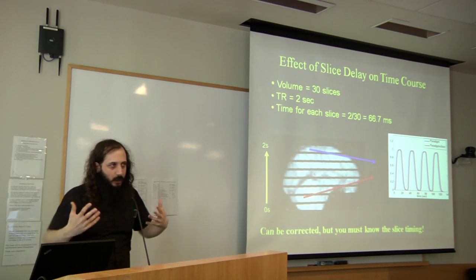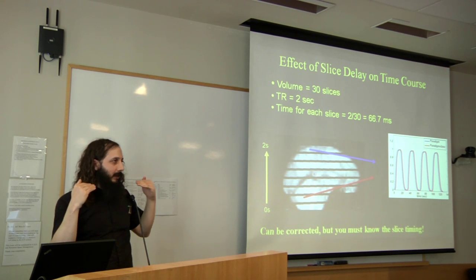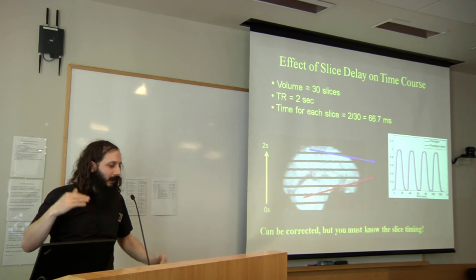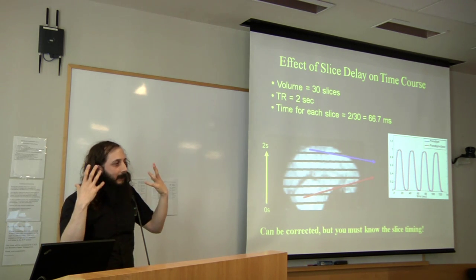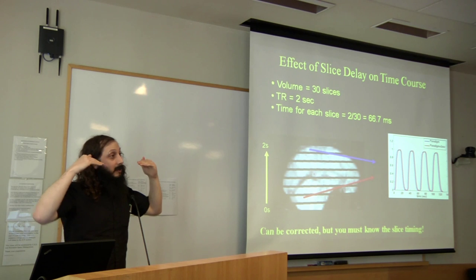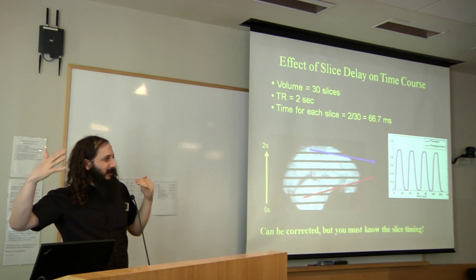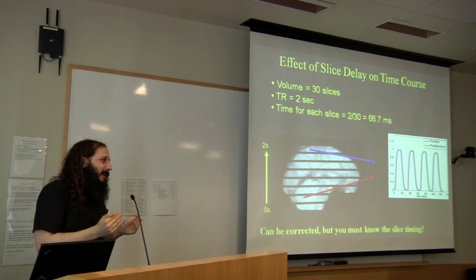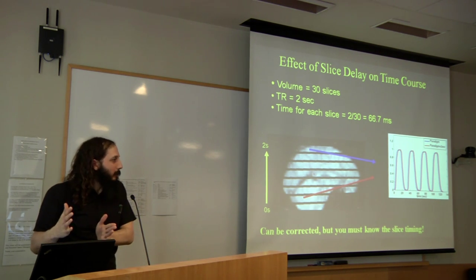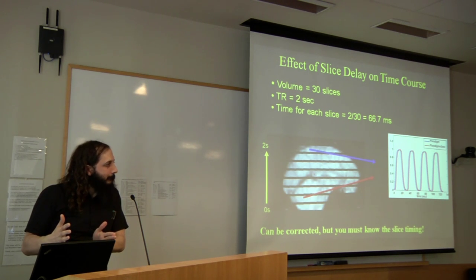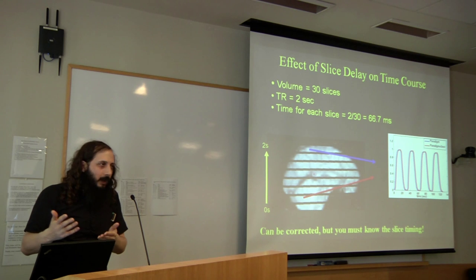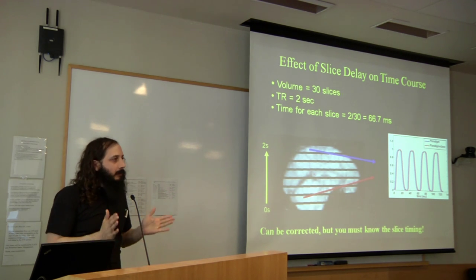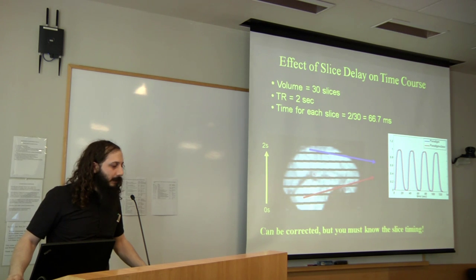Most analyses assume we're acquiring one 3D volume at one point in time, which isn't really the case with interleaved acquisition. Slice timing correction corrects for the fact that each slice is acquired at a different time. For example, with an interleaved acquisition of 30 slices over 2 seconds, each slice is acquired about 66 milliseconds apart. If the brain activates simultaneously, the activation seen in the bottom slice — acquired first — will look delayed relative to the top slice. These differences in slice timing translate to shifts in observed BOLD responses and need to be taken into account. The correction reinterpolates the data to a fixed time grid.